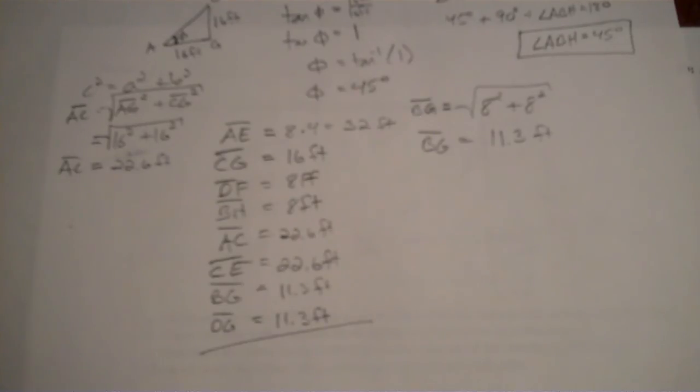Now I add all of these up: 11.3 plus 11.3 plus 22.6 plus 22.6 plus 8 plus 8 plus CG which is 16, plus AE which is 32 — equals a grand total of 131.8 linear feet of lumber for the entire truss.